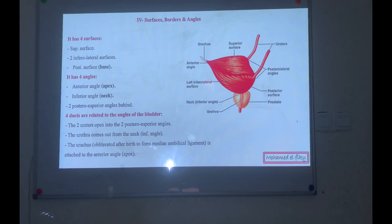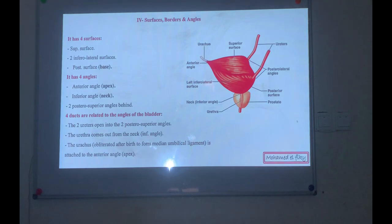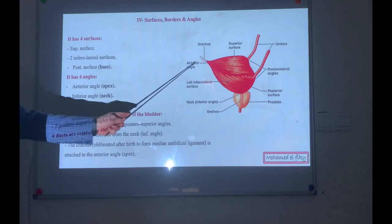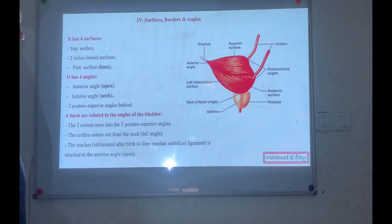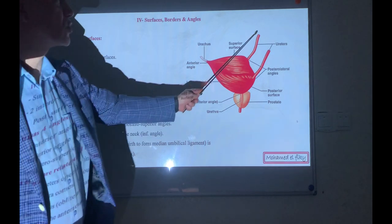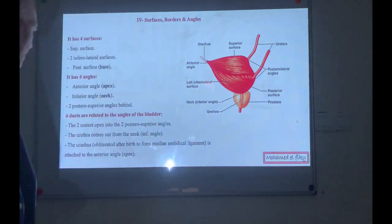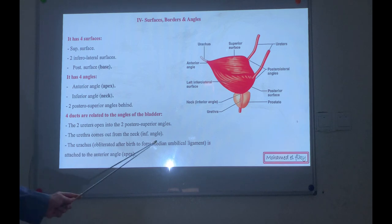The urinary bladder has four surfaces and four angles: superior surface, posterior surface or base, and two inferolateral surfaces. Four angles: anterior angle or apex, inferior angle at the neck continuing with the urethra, and two posterior superior angles. Four ducts are related to the angles: two ureters, the urethra at the neck, and the urachus which becomes obliterated to form the median umbilical ligament.